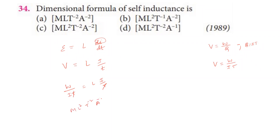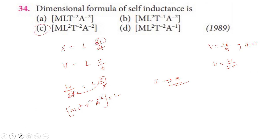So self-inductance L equals ML²T⁻² divided by A², giving ML²T⁻²A⁻². The coefficient of self-inductance dimension formula is ML²T⁻²A⁻². The third option is the answer.